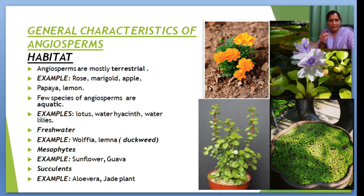Let's discuss the characteristics of Angiosperms. First, we will discuss the habitat of Angiosperms. Angiosperms are mostly terrestrial. For example, rose, barricorn, apple, and papaya.